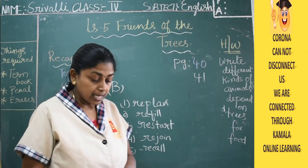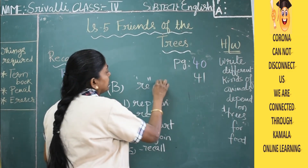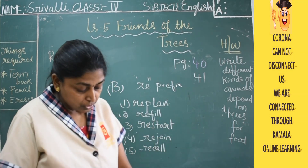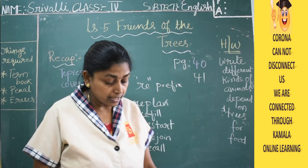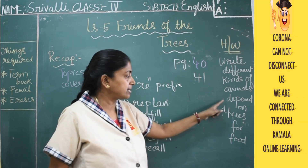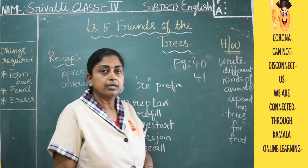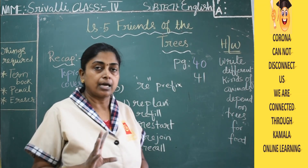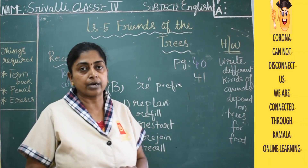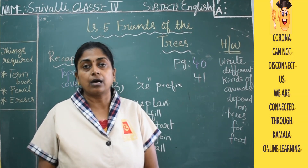Those are the answers. Hope you are comfortable with the 're' prefix. This is the end of the session. Hope you understood. Homework: write different kinds of animals that depend on trees for food. You can write as many as you want — however long the list, write different kinds of animals. That is your homework. Hope you enjoyed this session. In the next session, we will come with new topics and learn new things.